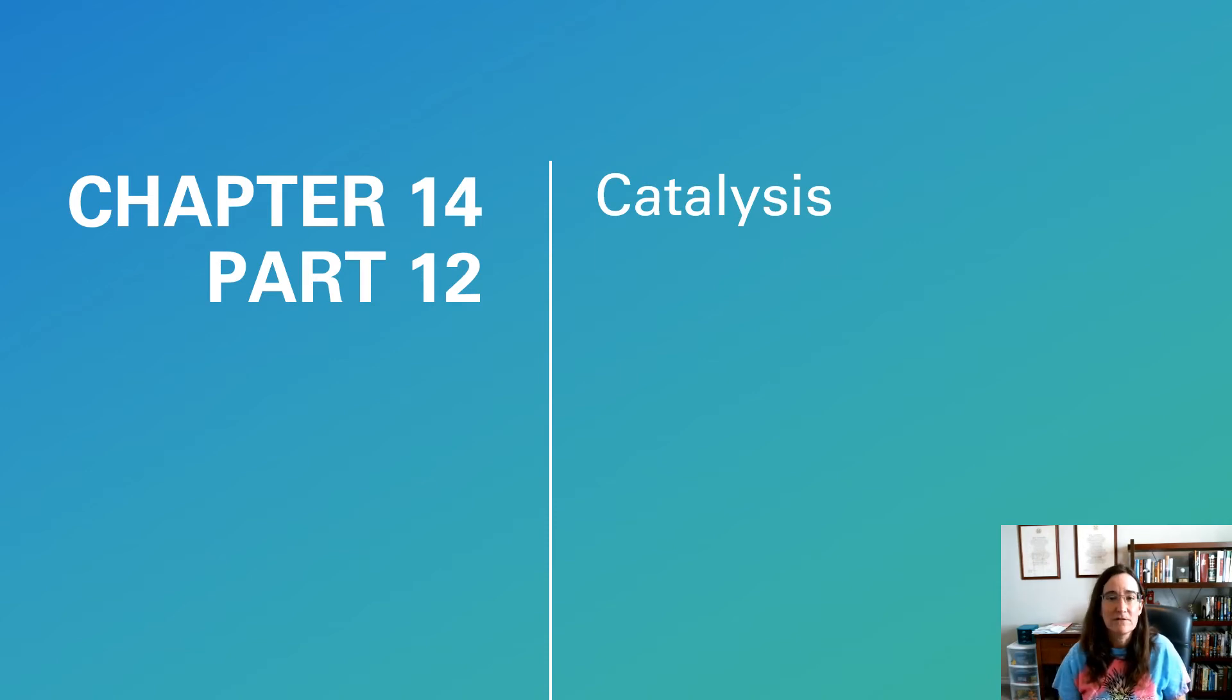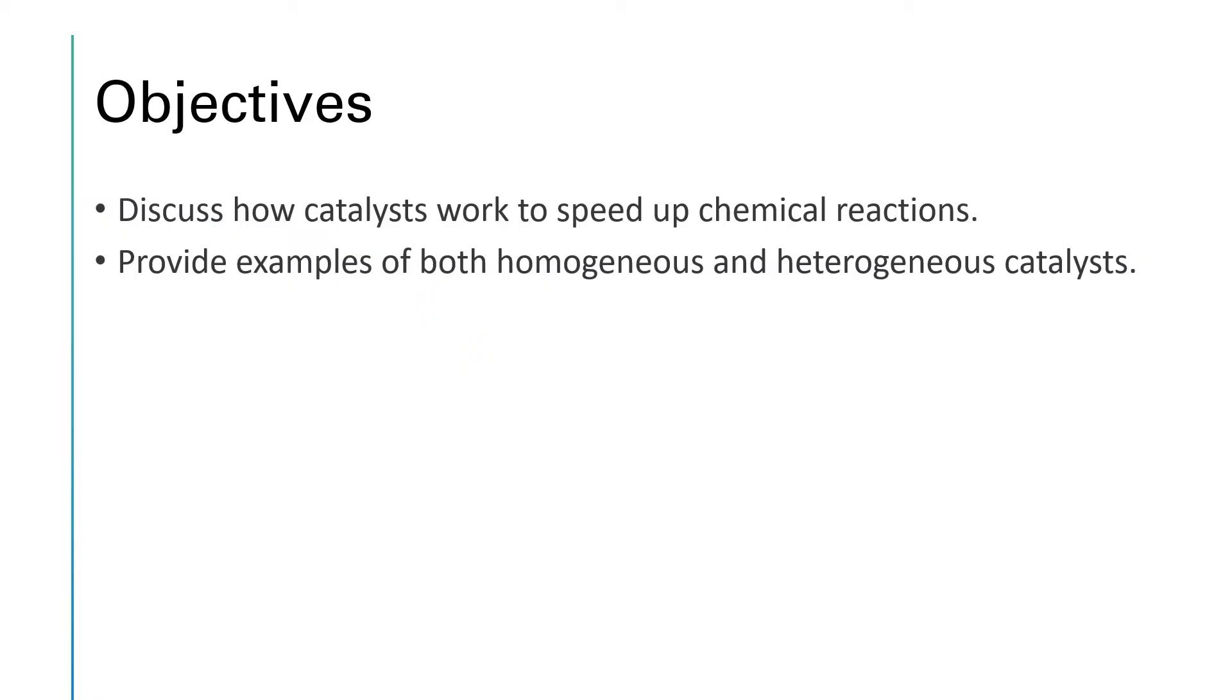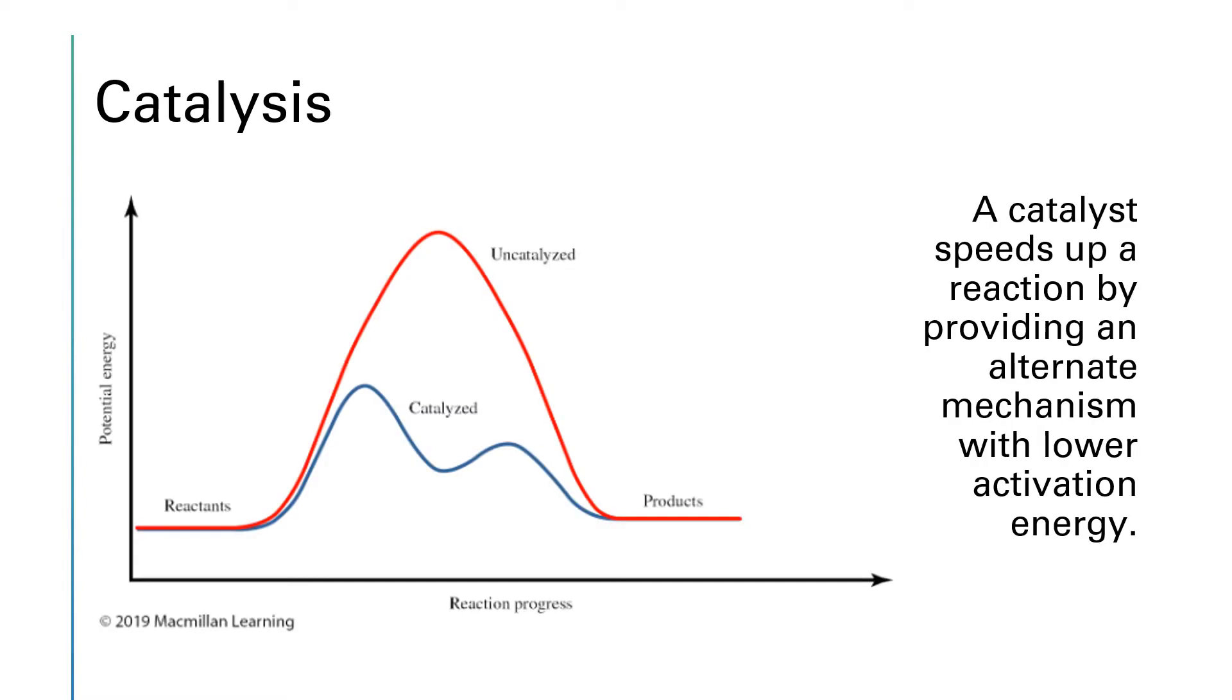The role of a catalyst is to speed up a chemical reaction, and we'll see on a mechanistic level how that actually works. Our two objectives are to discuss how catalysts speed up chemical reactions and to provide examples of both homogeneous and heterogeneous catalysis. The way that a catalyst speeds up a chemical reaction is by providing an alternate mechanism which has a lower activation energy. In this example, the uncatalyzed reaction is a single step with a large activation energy, and then once you add a catalyst, the reaction goes by a two-step mechanism which has a greatly reduced activation energy. Lower activation energy means faster reaction.